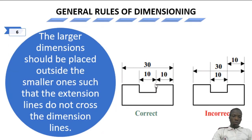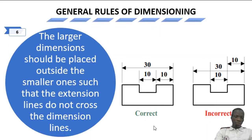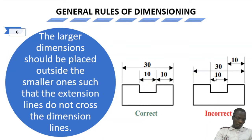To reinforce: the larger dimensions should be placed outside the smaller ones, such that the extension lines do not cross the dimension lines. The smaller dimensions are placed closer to the object, the larger dimension outside. If you place the larger dimension — say 30mm — in the middle while a smaller one's extension line crosses it, that is wrong and not the appropriate way of doing it.